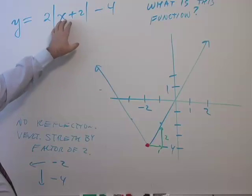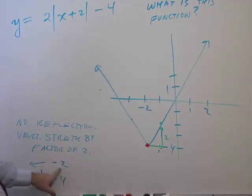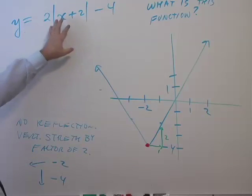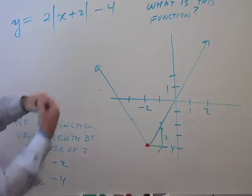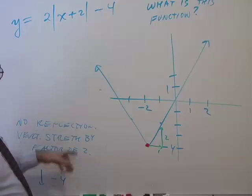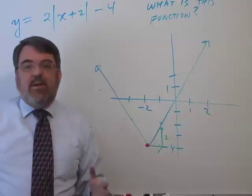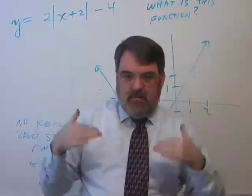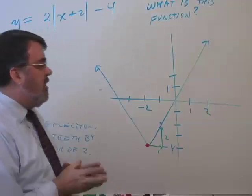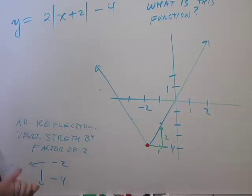So let me go through that again. Absolute value, the x was replaced with x plus two. That means vertical shift to the left. The absolute value, the original function was multiplied by two. Vertical stretch by a factor of two. And finally, four was subtracted from everything, which means it was a vertical shift down by negative four. So that would be that function. There you go.